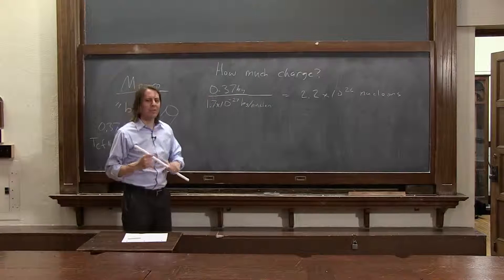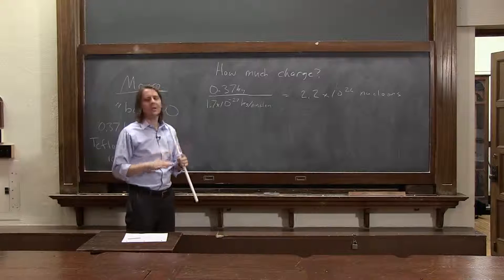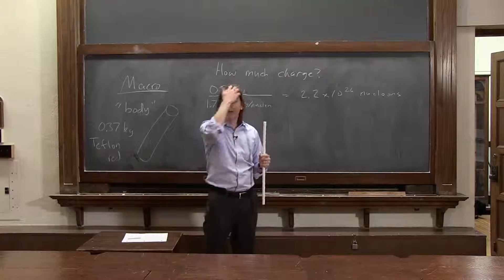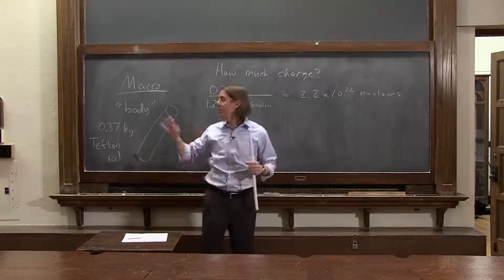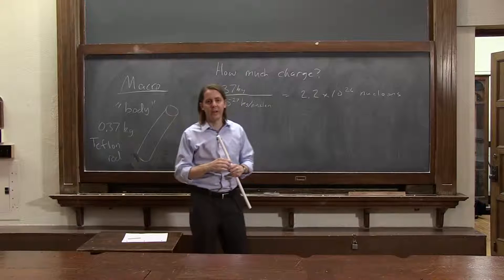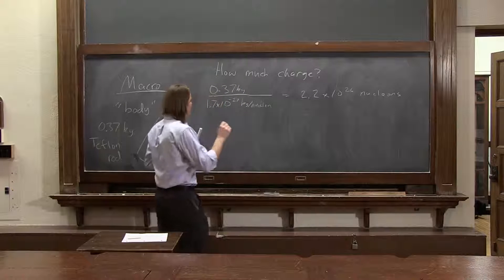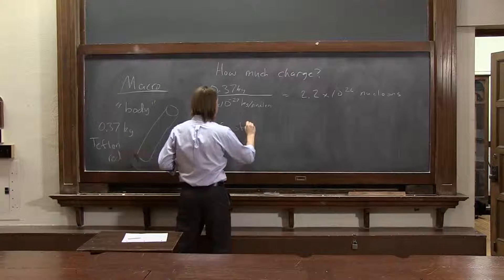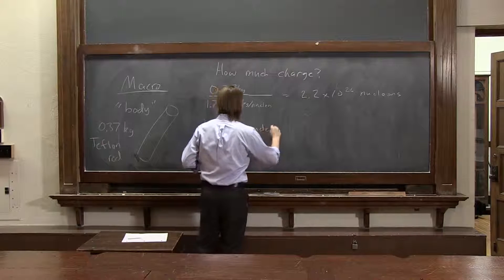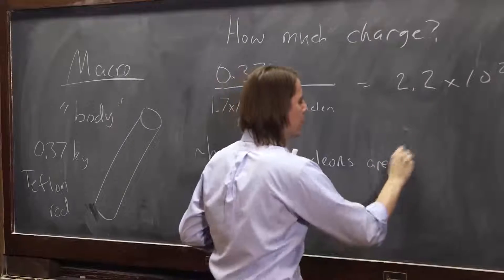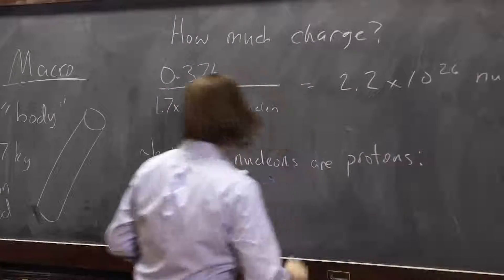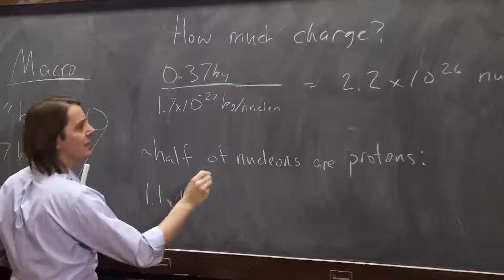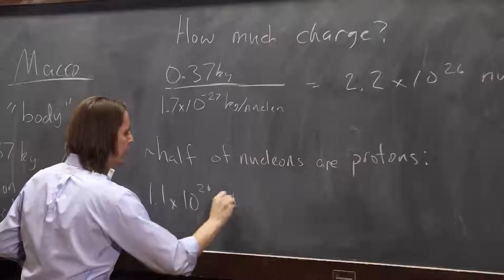Now, another thing we need to know about atoms is that there's usually roughly equal numbers of protons and neutrons in the nucleus. It's almost never exactly equal, but it's usually very close. With lithium, it was 3 and 4. It's usually closer than that. So if that's true, then we know that roughly half of the nucleons are protons. So we know we have 1.1 times 10 to the 26 protons.